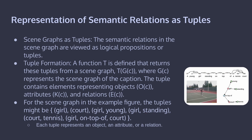The next step is the representation of semantic relations as tuples. Since a machine cannot visualize a graph directly, the entire scene graph is represented with tuples. A function T is defined as T(G(c)), where G(c) represents the scene graph of the caption, and the tuples contain elements representing objects O(c), attributes K(c), and relations E(c). For the example scene graph, the tuples might be: (girl), (court), (girl, young), (girl, standing), (court, tennis), (girl, on-top-of, court).